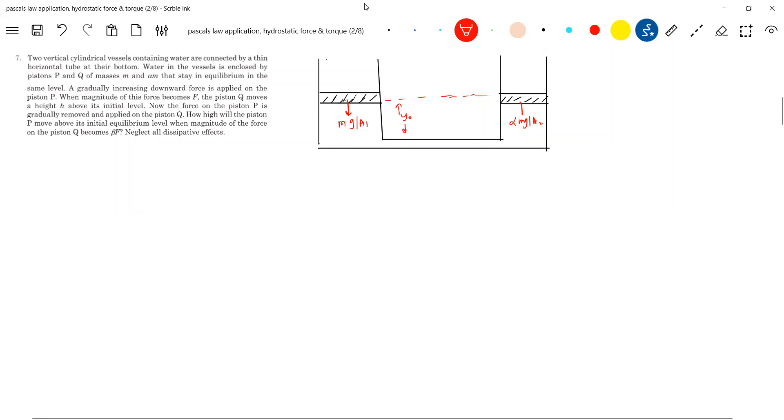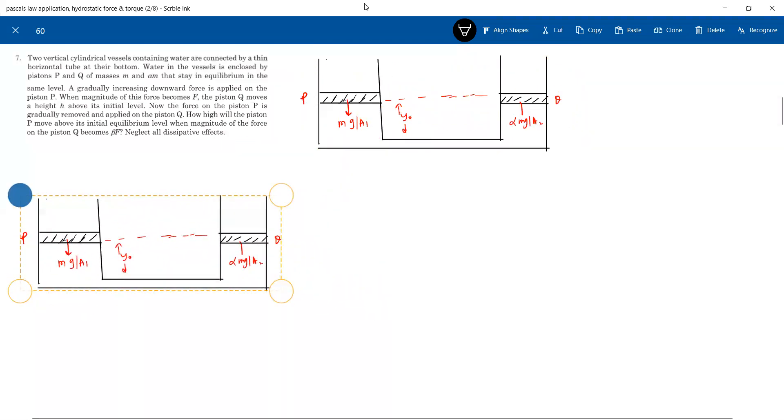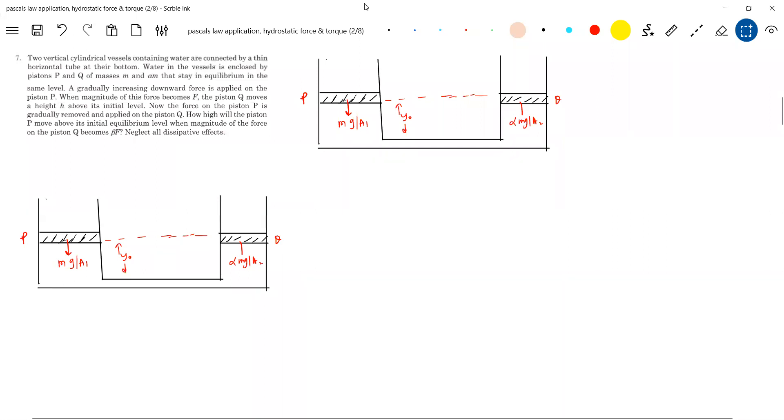So what he says is if a force F stays in equilibrium, same level I think till here I completed. A gradual increasing downward force is applied on the piston P. There's a piston P, there's a piston Q. The height H above the piston Q, most height H above its initial level. So I'll shift it up. Meanwhile, I'll try to draw diagram, you can work out.